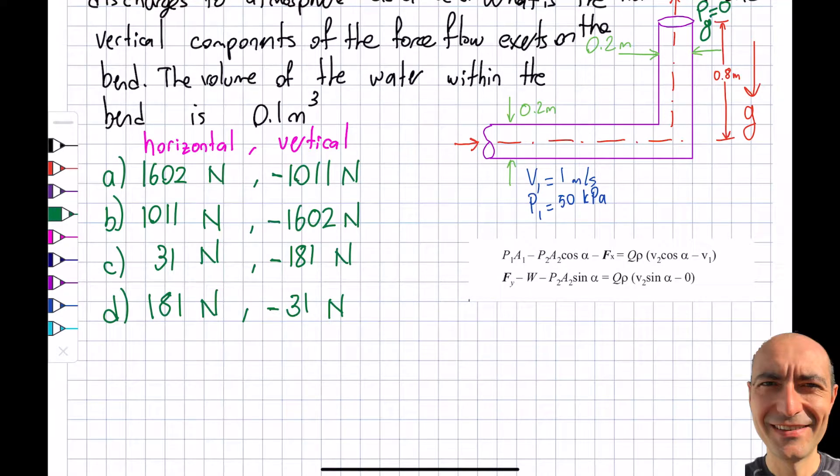Obviously I need to use conservation of momentum because the forces are being asked. The control volume will be right over here, the border within this bend. Now I am going to draw the free body diagram of that bend.